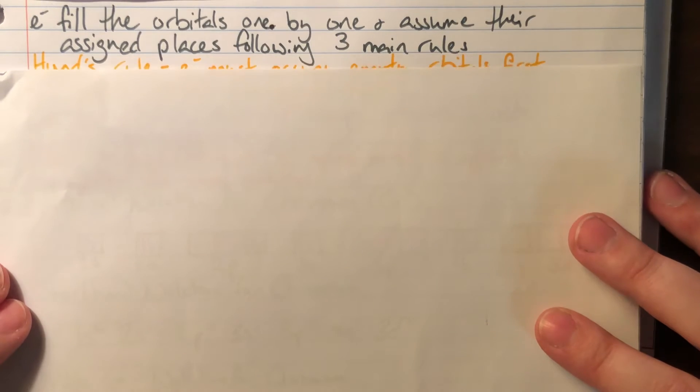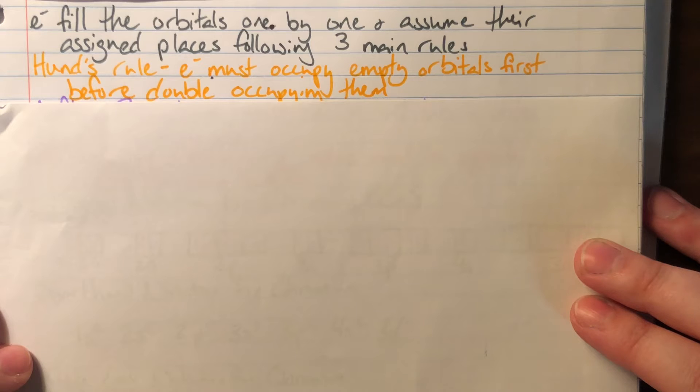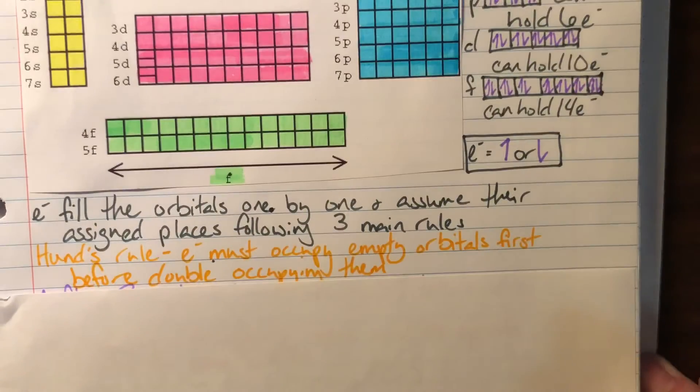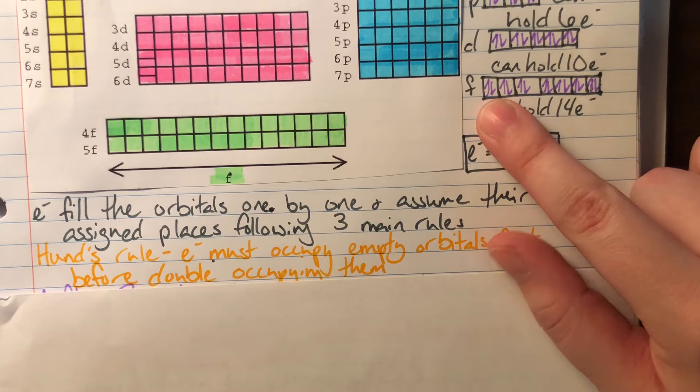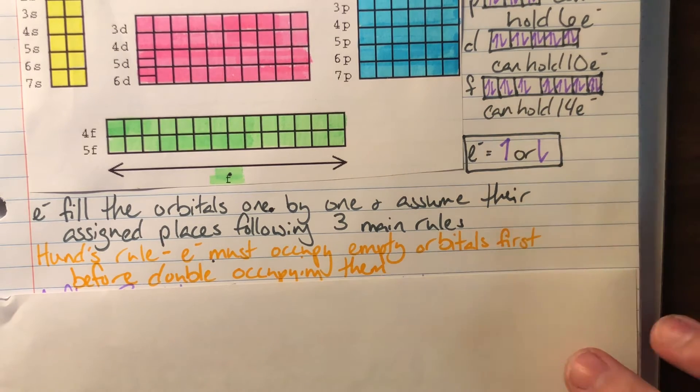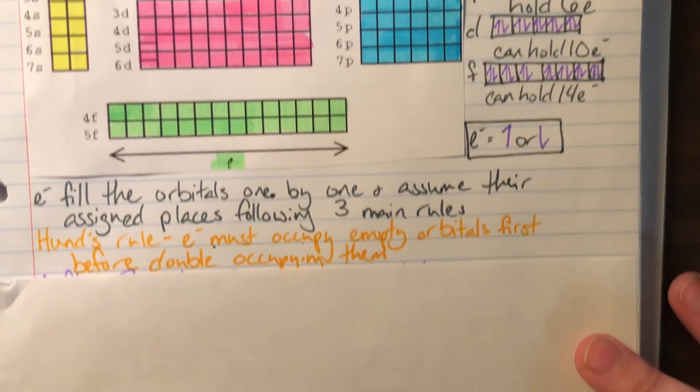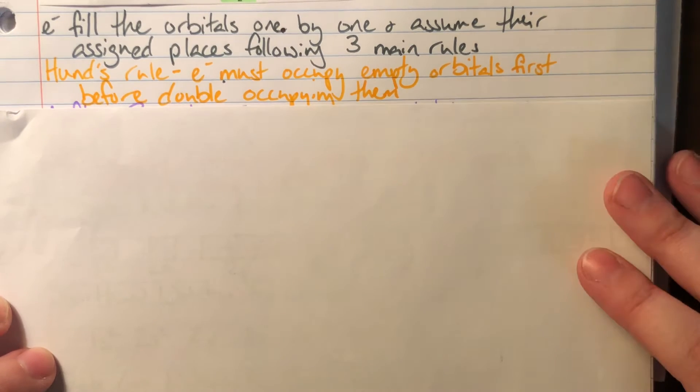The first rule that they are going to follow is Hund's rule. Hund's rule simply states that electrons must occupy empty orbitals first before double occupying them. We saw up here that the electrons are double occupying, meaning that I have two in each box. This is a completely filled one. But the electron's preference is going to actually be alone inside of that box. If they can do it, they will do it.